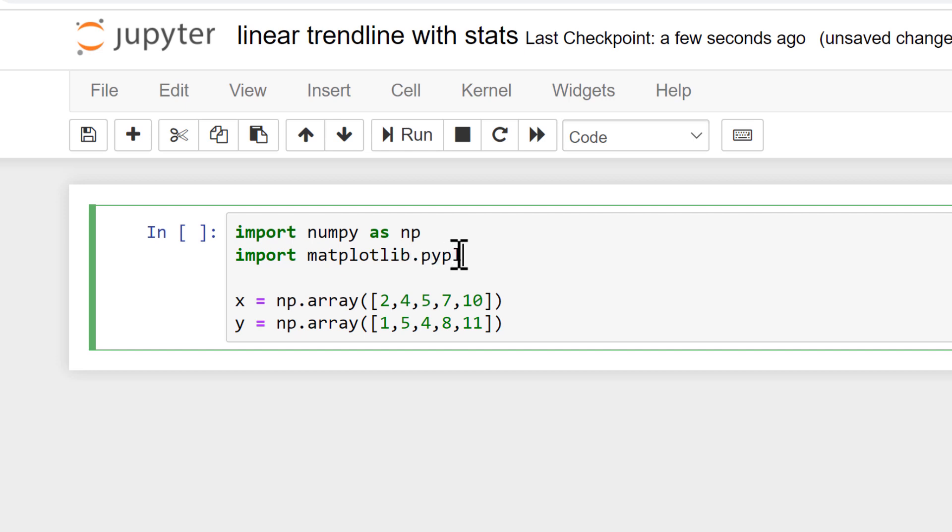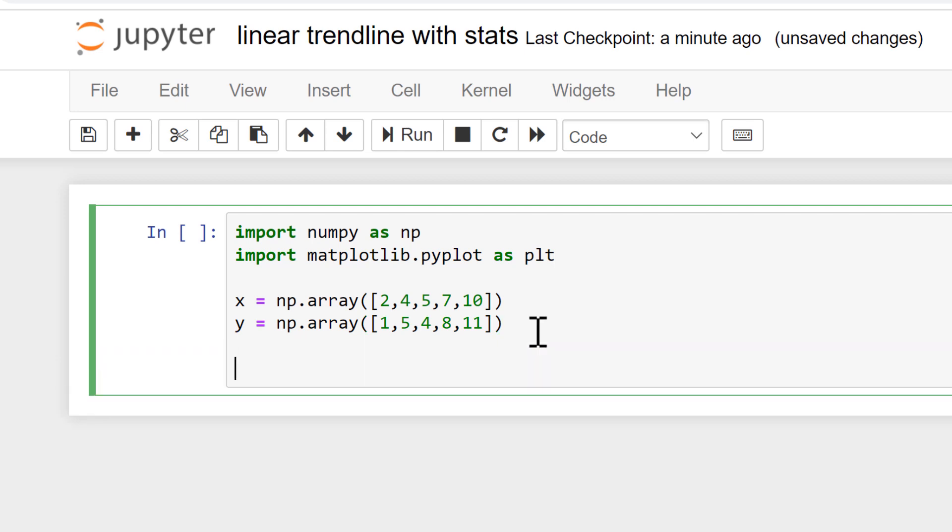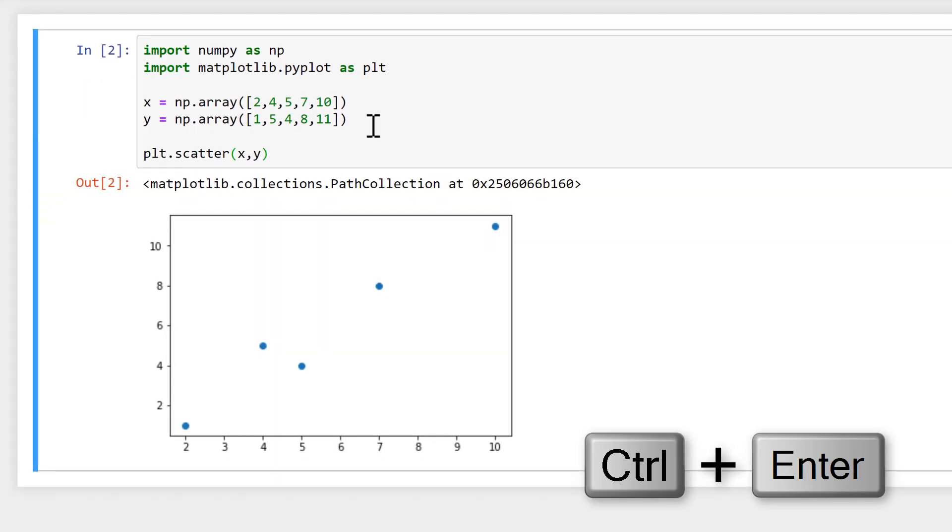dot pyplot as plt. Then we can plot this with plt.scatter to make a scatter plot, and we can put in the x and y values and run this, and we get our scatter plot.